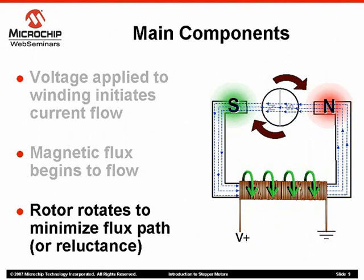As you can see, by adding more stators and phases, we can charge a winding, attract the rotor poles accordingly, then remove the applied voltage allowing other stators to attract these same rotor poles.